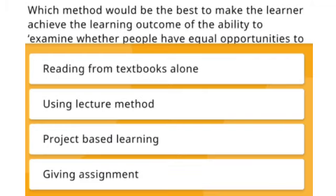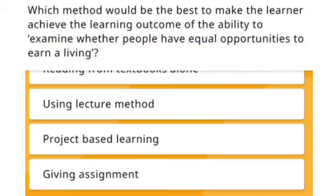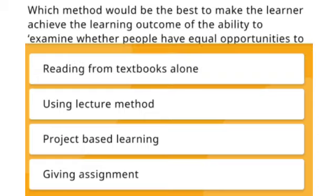The next question: which method would be the best to make the learner achieve the learning outcome of the ability to examine whether people have equal opportunities to earn a living? Options include: reading from textbook alone, using lecture method, project-based learning, or giving assignments. The right answer is project-based learning.